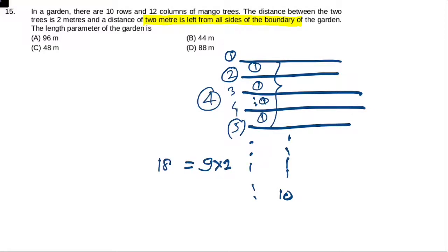And extra information is that 2 meters is left from all sides of the boundary. So 2 meters upward and 2 meters downward after the tenth row. So 2 here and 2 here makes 4 meters extra. Total row length is 18 plus 4, that implies 22.